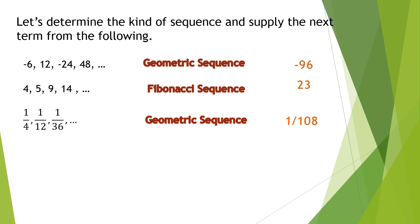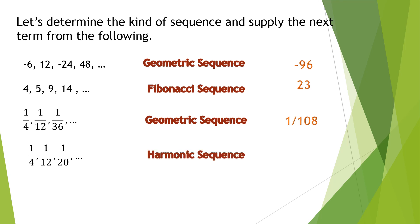Number 4: 1/4, 1/12, 1/20. Is this now the harmonic sequence? From 4 becoming 12, a difference of 8. From 12 becoming 20, a difference of 8 again. Therefore, we are certain this falls under a harmonic sequence. The next number to appear is 1/28.